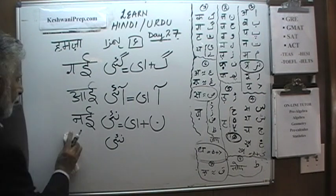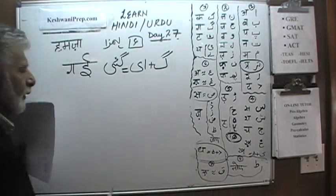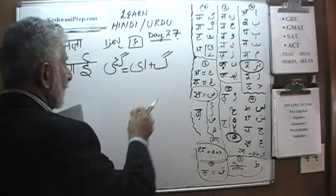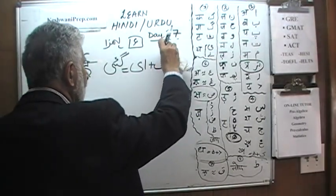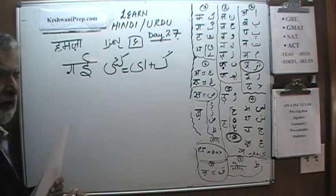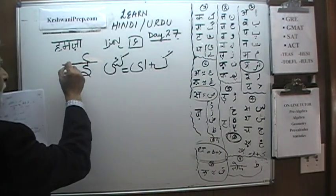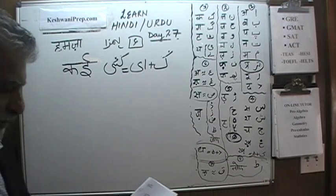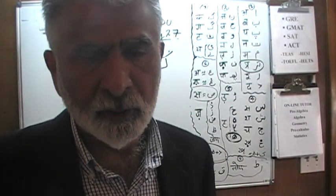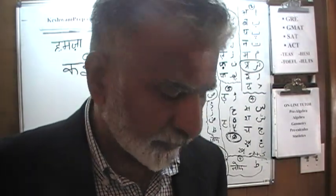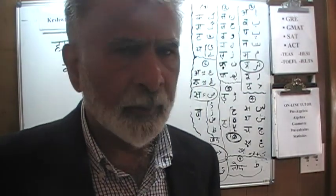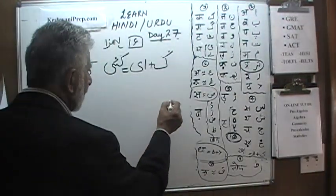Just one more — instead of two Gaaf letters we get rid of one, and the Gaaf becomes a Ka. So it's a new word: 'kaai.' Do you know what 'kaai' means? 'Kaai' means various, many — as in 'kai logo se baat ki' meaning 'I spoke to many people,' or 'kai logo ne mujhe mashwara diya' meaning 'many people gave me advice.'